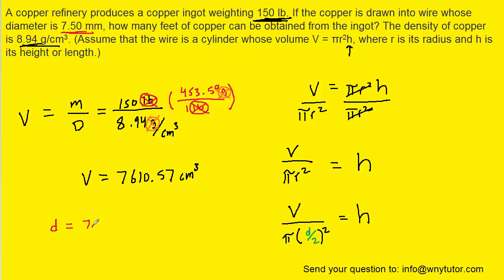We know the diameter is 7.50 millimeters. We also know that one meter is a thousand millimeters. Again notice the way we set it up so that the millimeters will cancel out. And then one meter is also 100 centimeters.